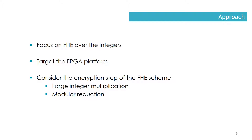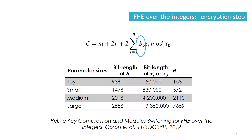Also, large integer multiplication is known to be one of the core bottlenecks. Here is the encryption step of the FHE scheme over the integers. For more information, the reader is referred to the corresponding 2012 EuroCrypt paper. The encryption of a message bit M requires several large multiplications, accumulations, additions, and modular reduction to give the output ciphertext C.